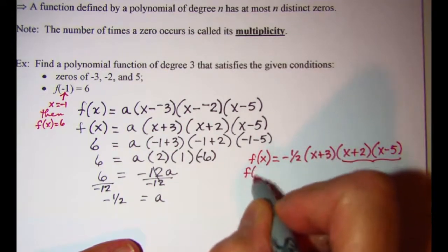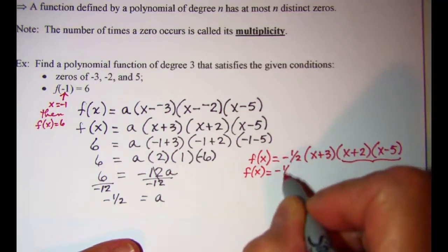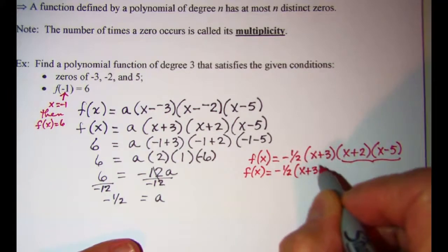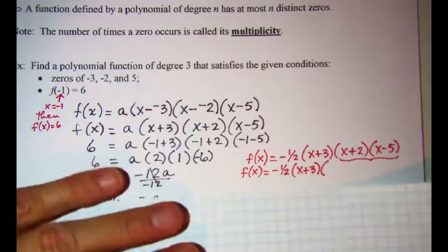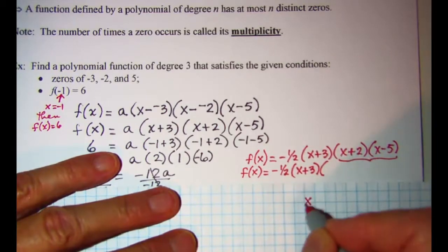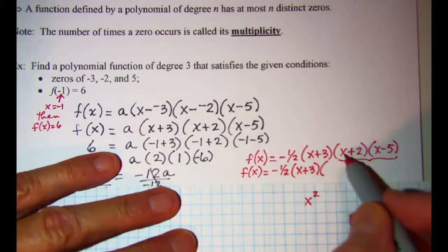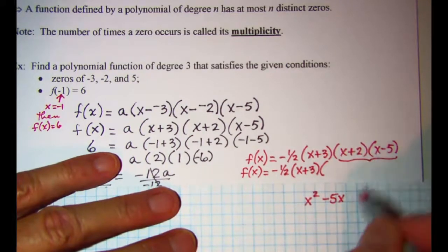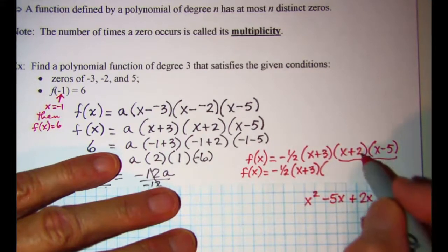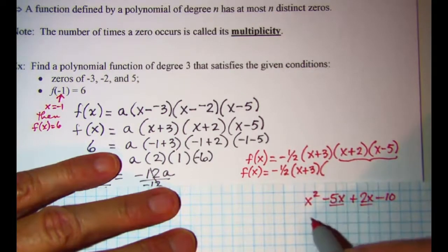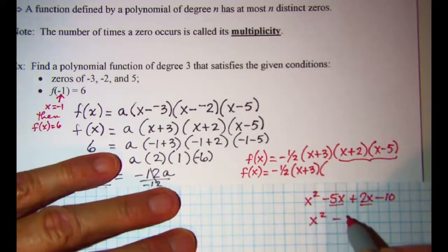f of x equals negative one-half times x plus 3, times — multiplying x plus 2 and x minus 5: x times x is x squared, x times negative 5 is negative 5x, 2 times x is 2x, and 2 times negative 5 is negative 10. Combining like terms gives x squared minus 3x minus 10.